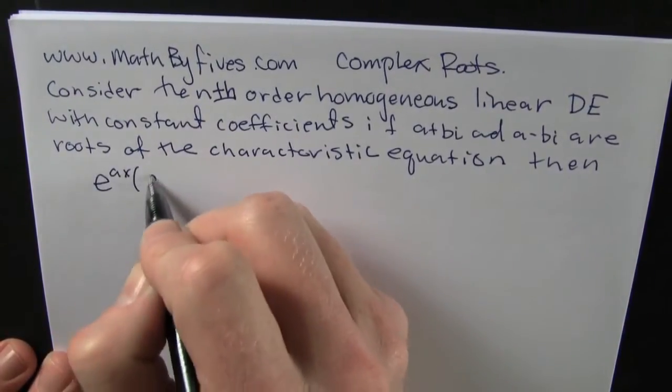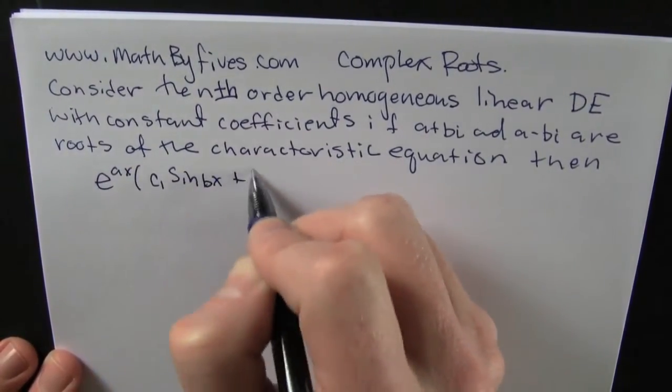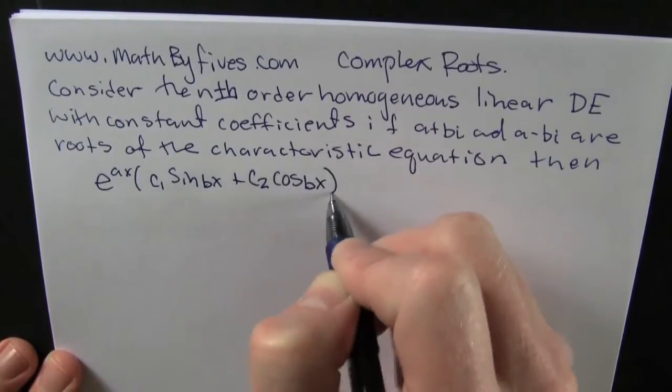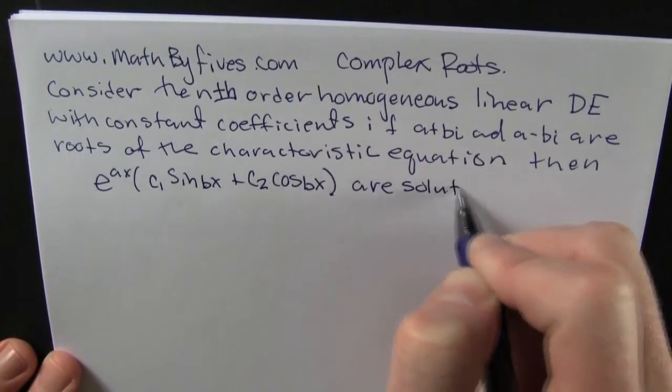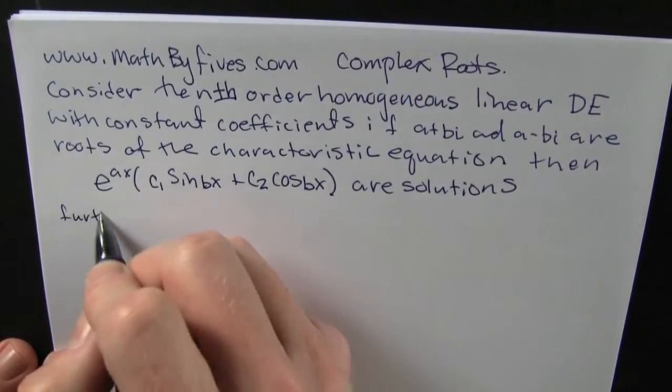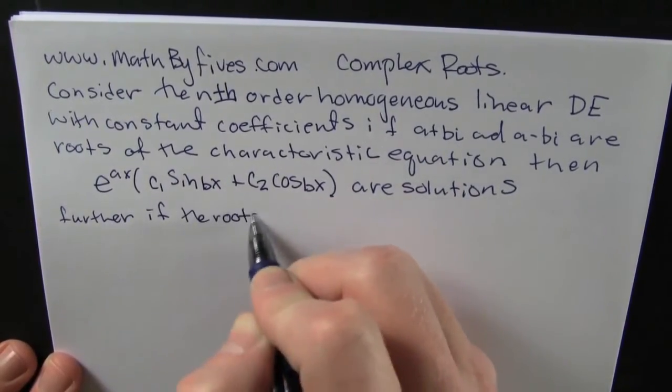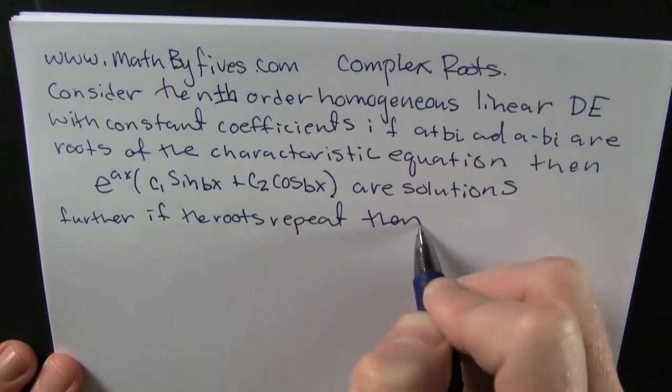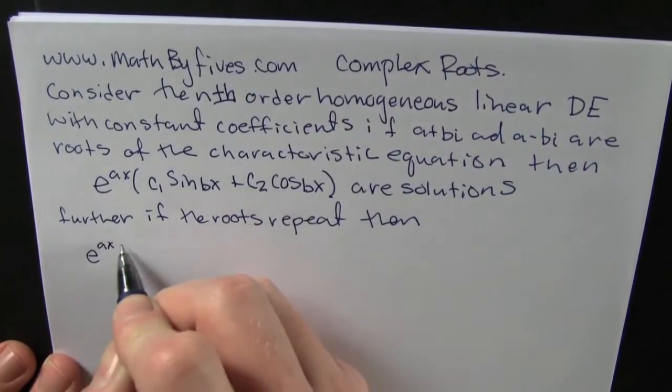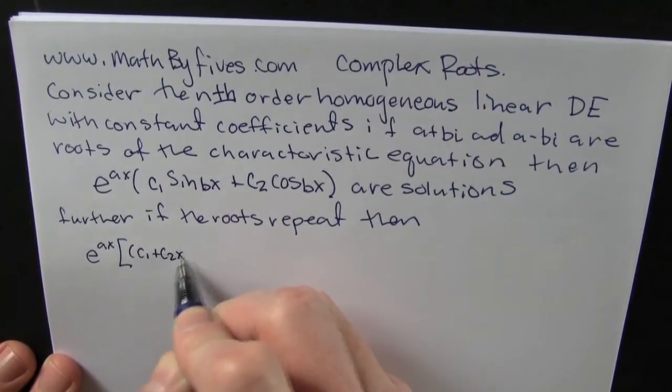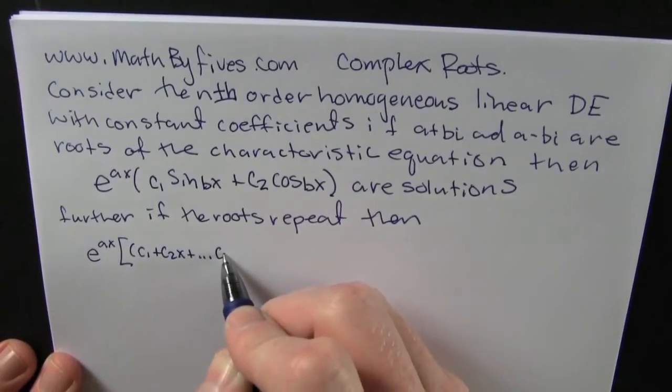What's going to happen with these guys? In this case, e to the real part x times c1 sine imaginary part x plus c2 cosine imaginary part x are solutions. Further, if those roots do repeat, then I'm going to have my constants as a multiple of the different powers of x in front of my sine and cosine.